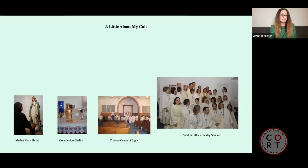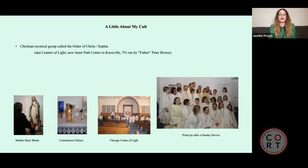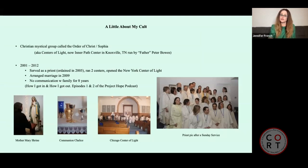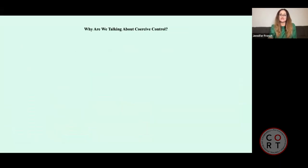There are a lot of factors here, and that's why we're going to focus on coercive control and eight established methods of coercion that we'll explore so that you can really assess for yourself and hopefully learn a little something about what to look out for and prevent abuse before serious harm is done. So in order to do all that, I realized it might be helpful to give you a little personal context because I will use myself as an example. So I was in a Christian mystical group from 2001 until 2012. I served as a priest. I ran two centers. I was in New York City. I had an arranged marriage in that organization, and I had no communication with my family for about eight years.